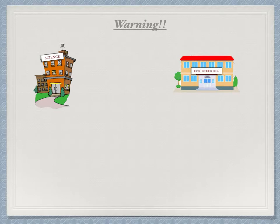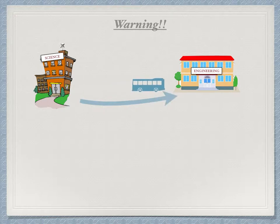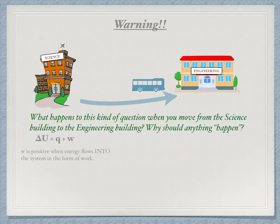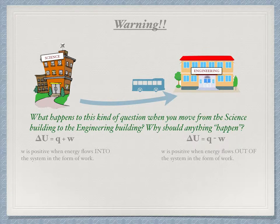One word of warning: at most universities there is a science building where the chemistry department is found, and somewhere across campus there is a building for engineering. Some students spend time in both. Over in the science building, the first law is delta U equals Q plus W, and W is positive when energy flows into the system. But in the engineering building, students are told the first law is delta U equals Q minus W, and W is positive when energy flows out. Who's right?